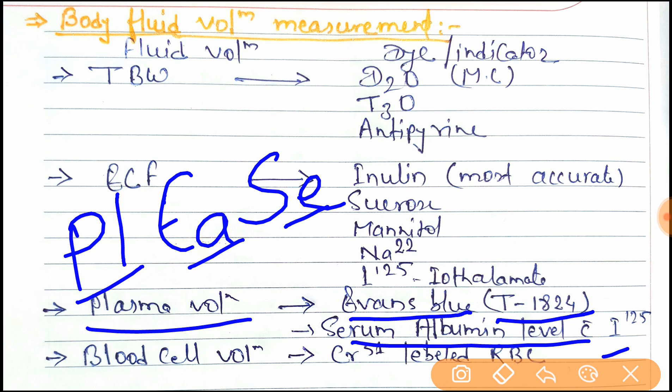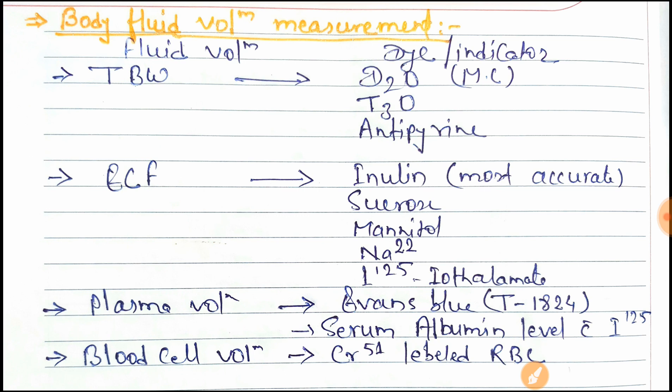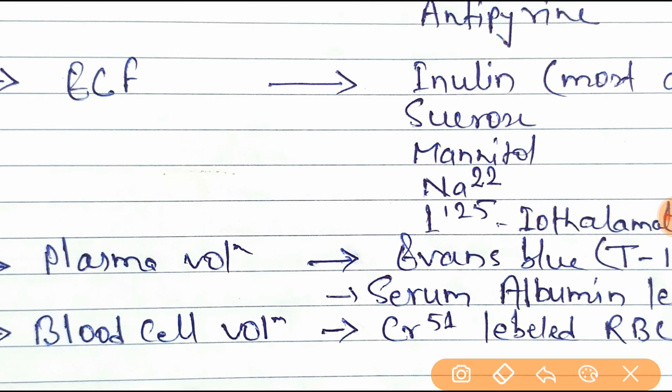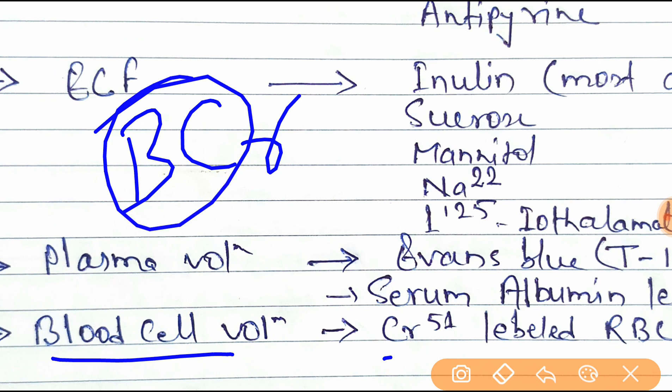Next is blood cell volume. The trick is BCR or BC - B for blood cell volume and CR for chromium labeled RBC.